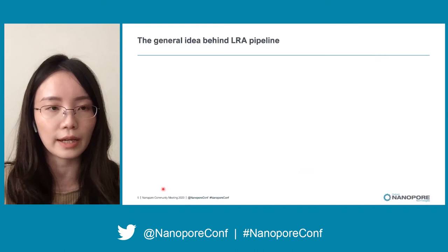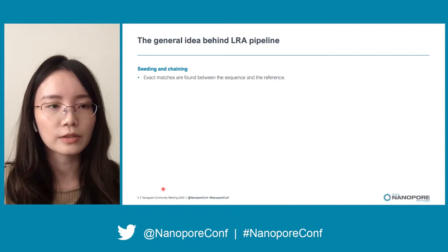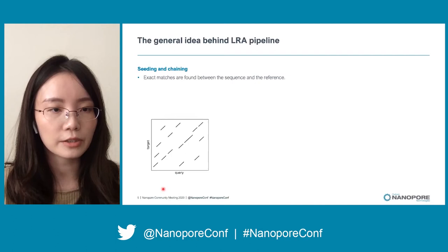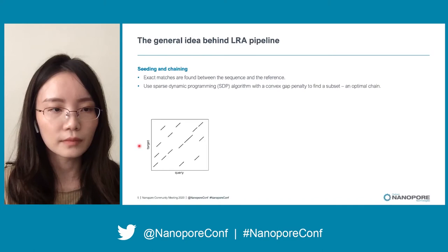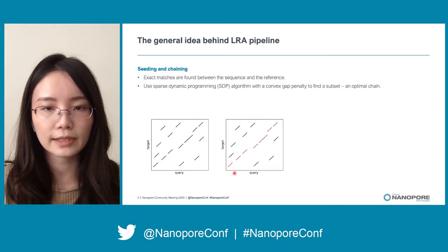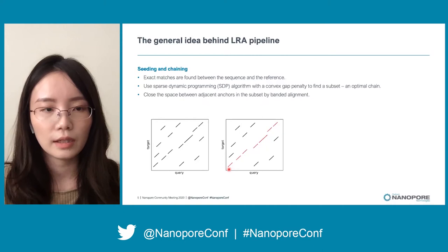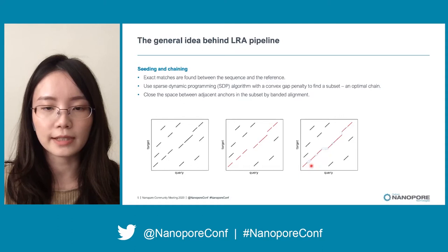Now let's move on to the methods and the pipeline of LRA. LRA uses a common approach to map long sequences back to the reference, which is called seeding and chaining. There are three sub-steps of seeding and chaining. First, exact matches are found between the sequence and the reference. Then LRA uses a sparse dynamic programming algorithm with a convex gap penalty to find a subset of anchors, which are highlighted in red. Finally, banded alignment is used to fill in the space between adjacent anchors on the chain.